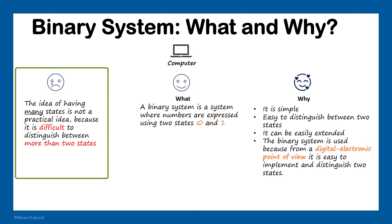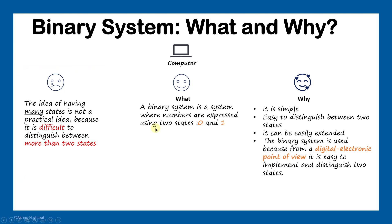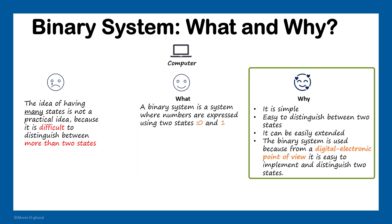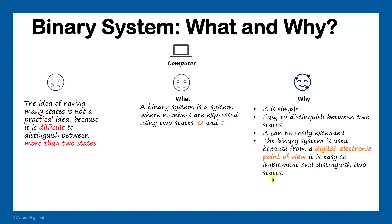To summarize: we started with the idea of having many states, then faced the challenge that it's very difficult to distinguish between more than two states. The binary system is a system where numbers are expressed in the form of zeros and ones. We use binary for computers because it's easy to distinguish between two states, we can easily extend the system to represent more than four billion numbers, and from a digital electronics point of view it's easy to implement. Thank you for watching — if you enjoyed the video please subscribe and leave a like.